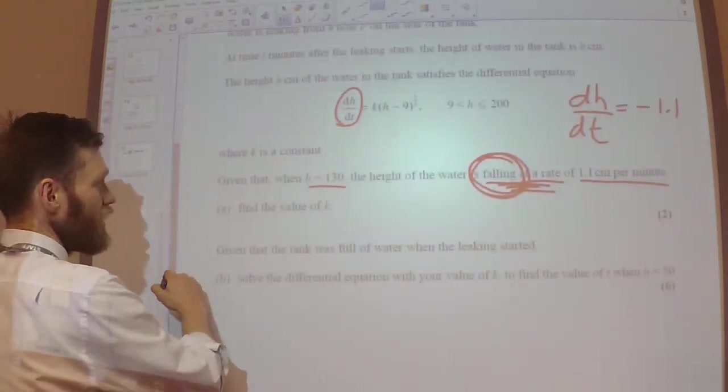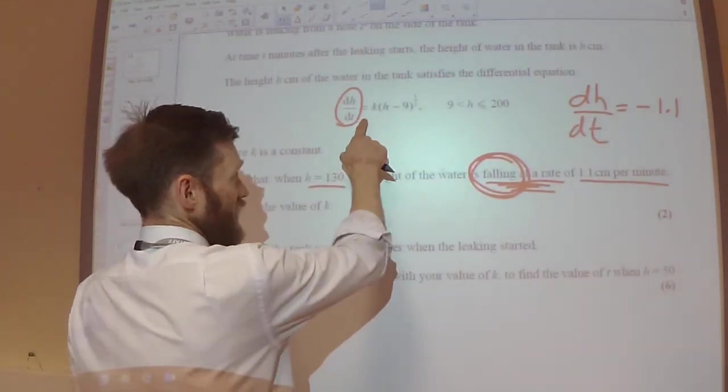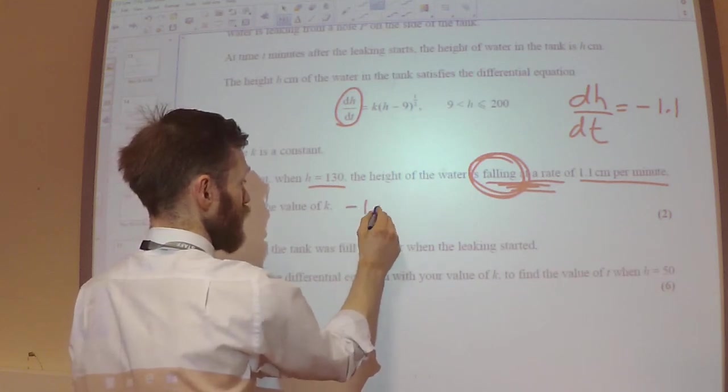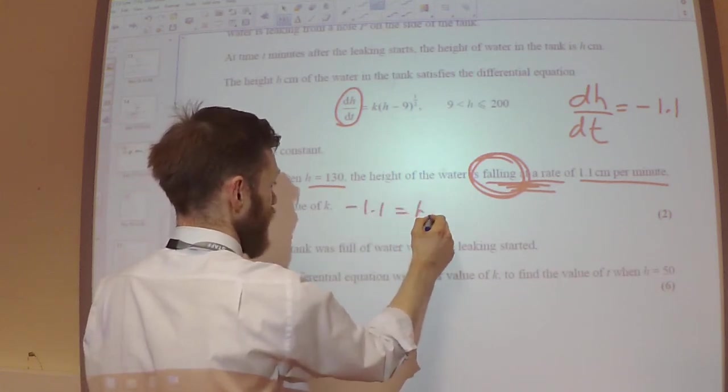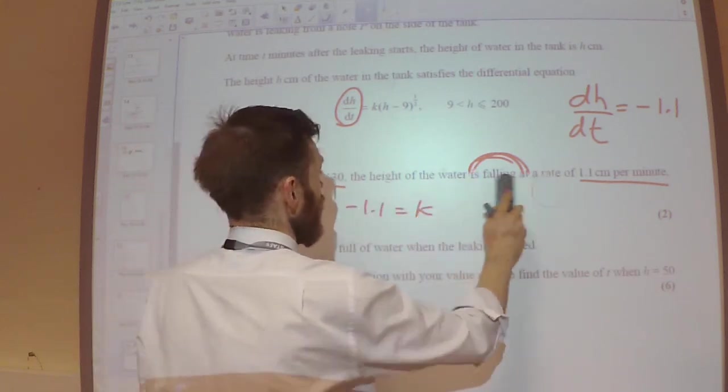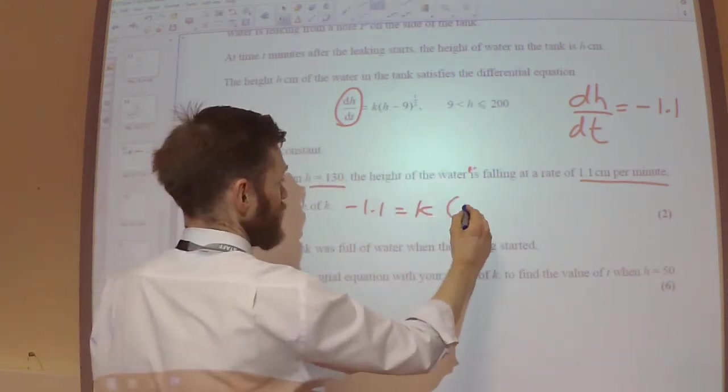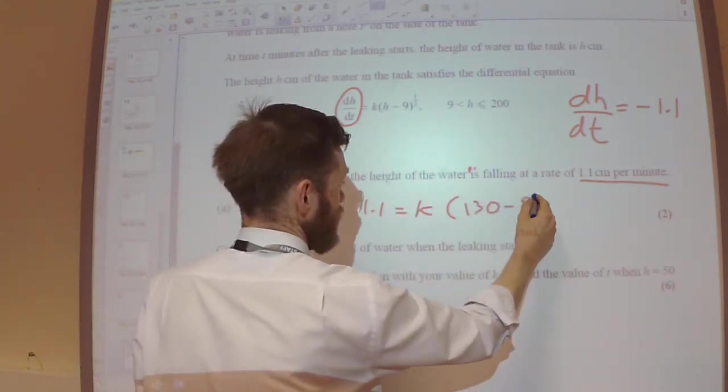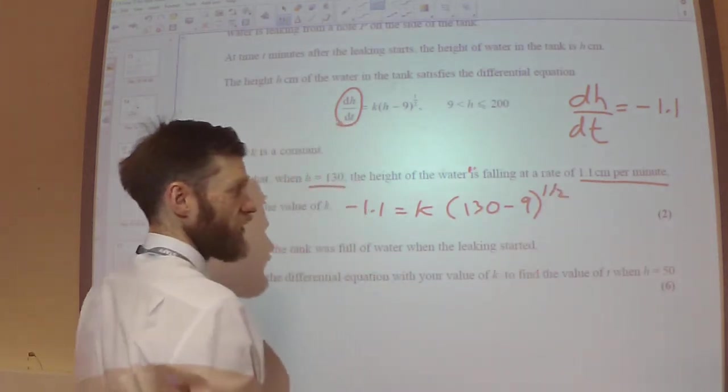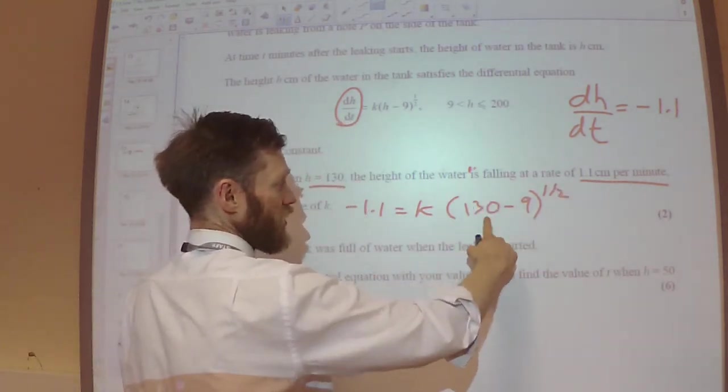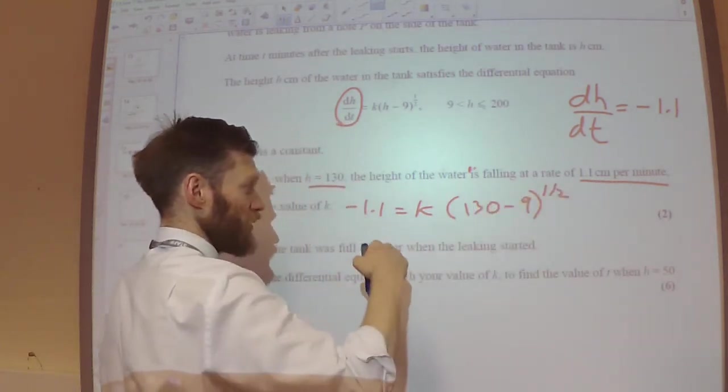So, substituting the number of 130 in as well, we get minus 1.1 equals K times 130 minus 9 to the power of a half. So this is 121. The square root of 121 is 11.